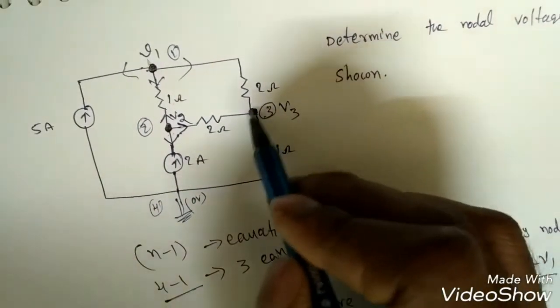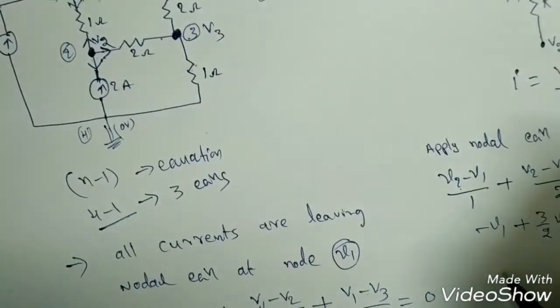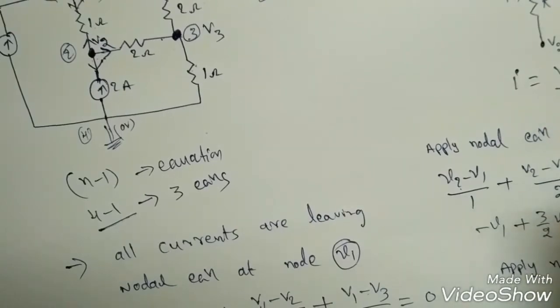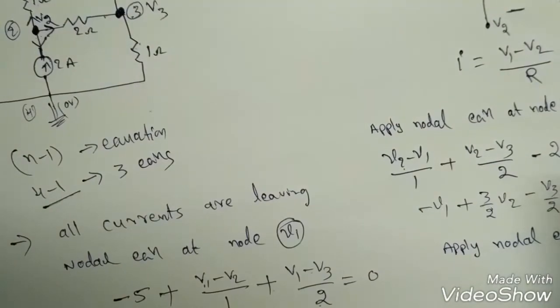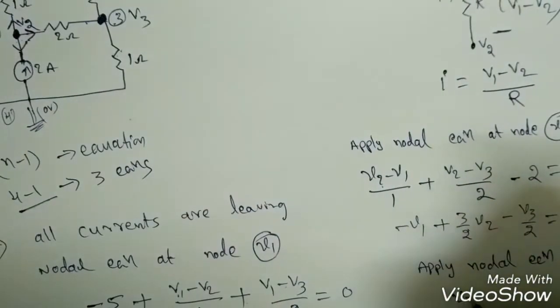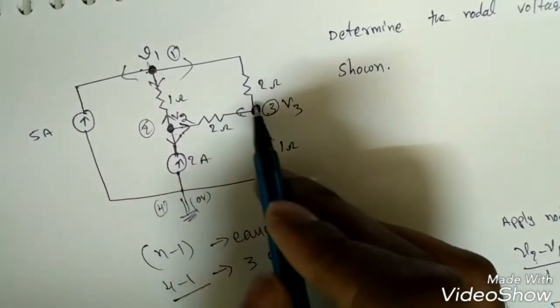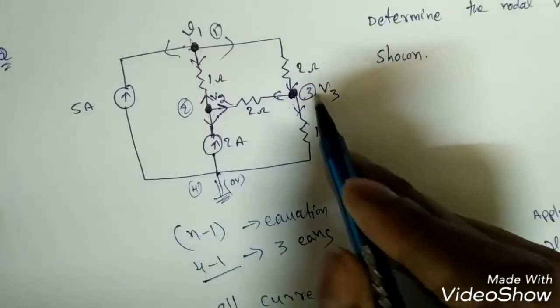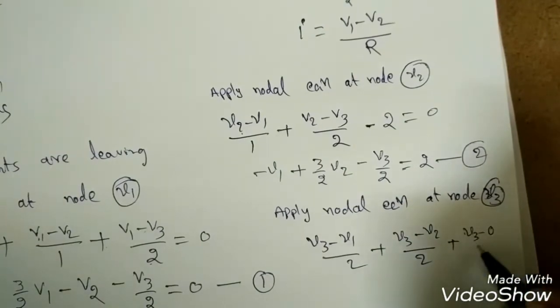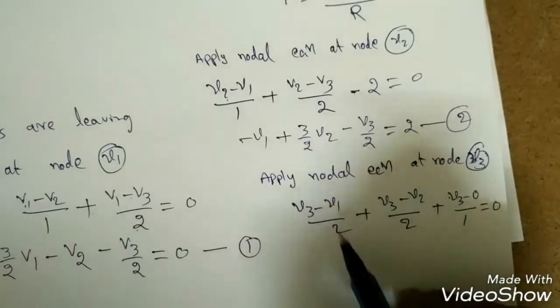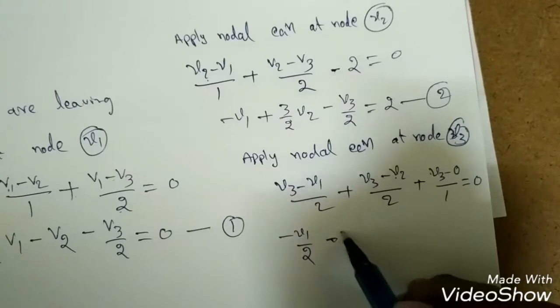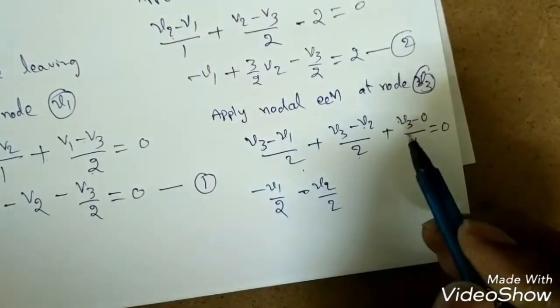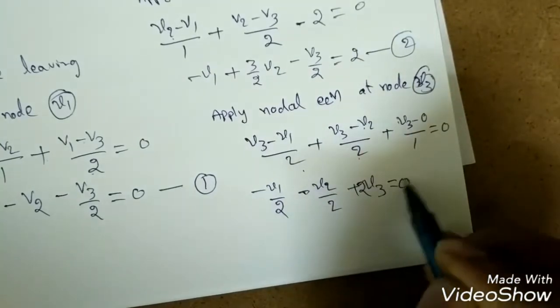Applying the nodal equation at node V3: assuming all currents are leaving, we get (V3 minus V1)/2 plus (V3 minus V2)/2 plus (V3 minus 0)/1 equals 0. Rearranging: minus V1/2 minus V2/2 plus 2V3 equals 0. This is equation 3.